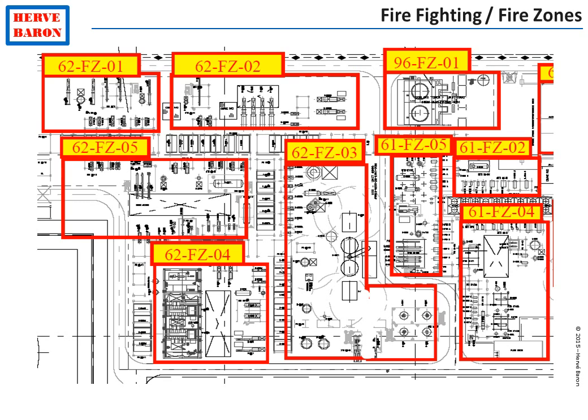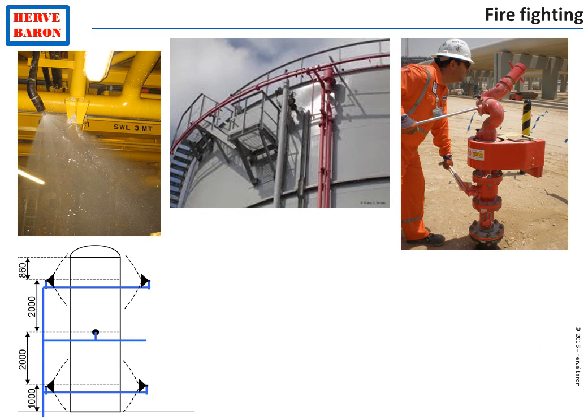Within each fire zone, active and passive fire protection are provided. Active firefighting consists of spraying water on the plant equipment. Spraying water aims at cooling down the equipment so that it will not lose its mechanical strength and collapse. It also aims at absorbing heat from the fire to reduce its intensity. Spraying water can be done by several means.